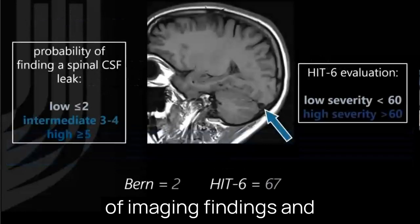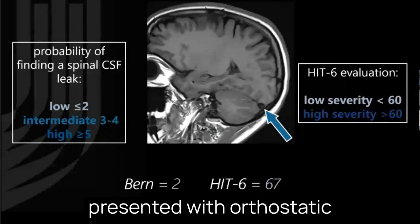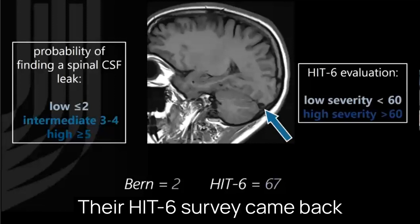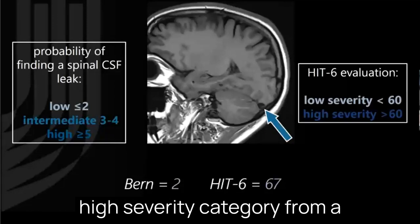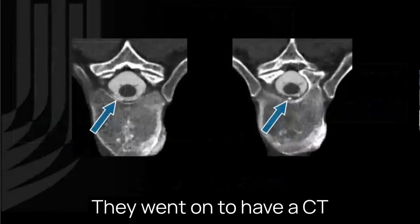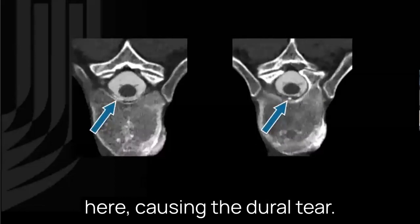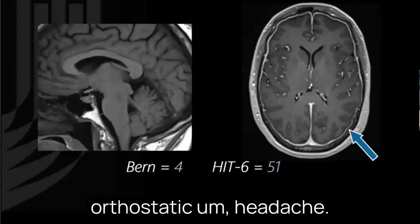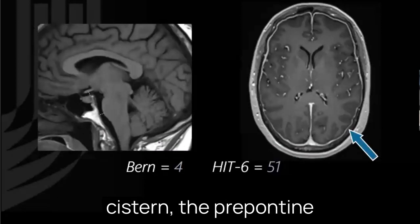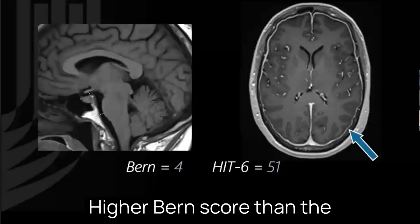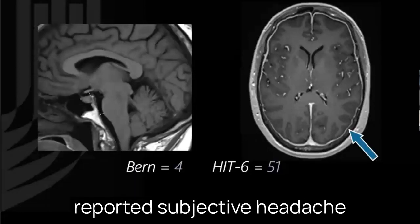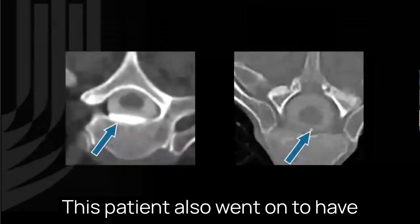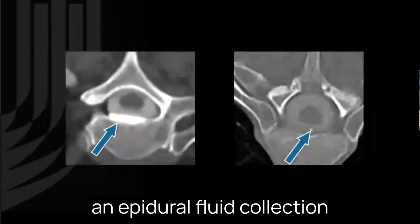I wanted to show a couple of imaging examples from the paper. The first patient presented with orthostatic headache; on their initial MRI, the only finding of SIH was a venous distension sign, giving a Burn Score of 2. Their HIT-6 came back at 67, placing them in the high severity category. They went on to have a CT myelogram, which showed an epidural fluid collection and a calcified disc-osteophyte causing the dural tear. To juxtapose that, a second patient also presented with orthostatic headache with a Burn Score of 4, based on measurements of the suprasellar cistern, prepontine cistern, and pachymeningeal enhancement — yet their reported subjective headache severity and quality of life impact was substantially lower. Their CT myelogram also showed an epidural fluid collection and a disc-osteophyte.